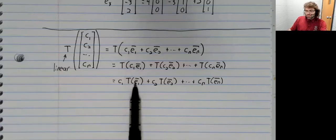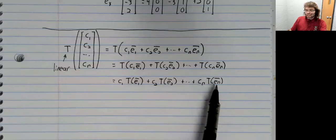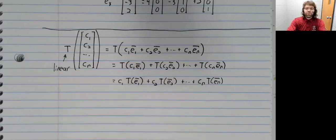Now these T's are vectors, so we have a linear combination of vectors.